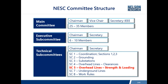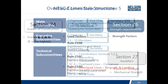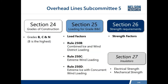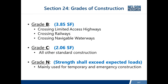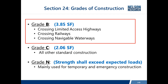The subcommittee most closely aligned with the ANSI documents is Subcommittee 5, addressing overhead lines — both strength and loading. Sections 24, 25, 26, and 27 are the responsibility of Subcommittee 5, covering grades of construction, loading, and strength. There is also a Section 27 on insulators that the same subcommittee is responsible for.